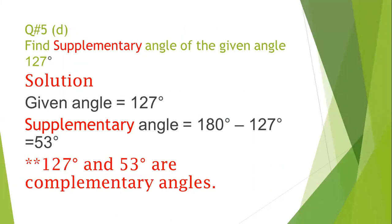Here is a question: find the supplementary angle of the given angle 127 degrees. We know that the sum of supplementary angles is 180 degrees. The given angle is 127 degrees, and to find the supplementary angle, we subtract 127 from 180 degrees and we get 53 degrees. So 127 degrees and 53 degrees are supplementary angles because if we add them, we get 180 degrees.